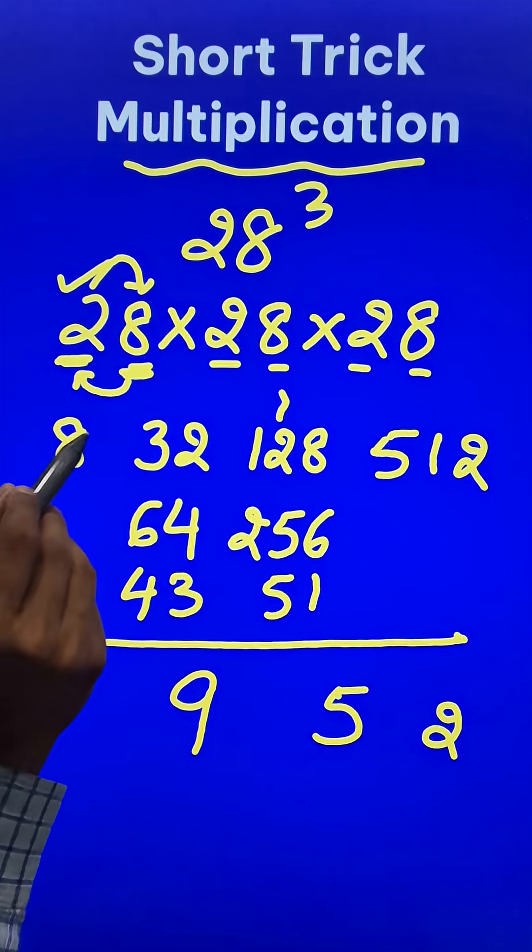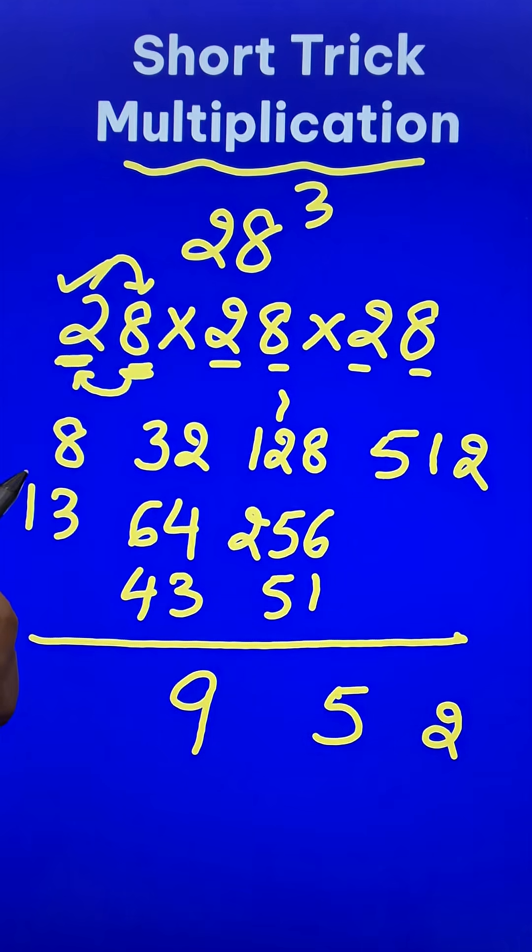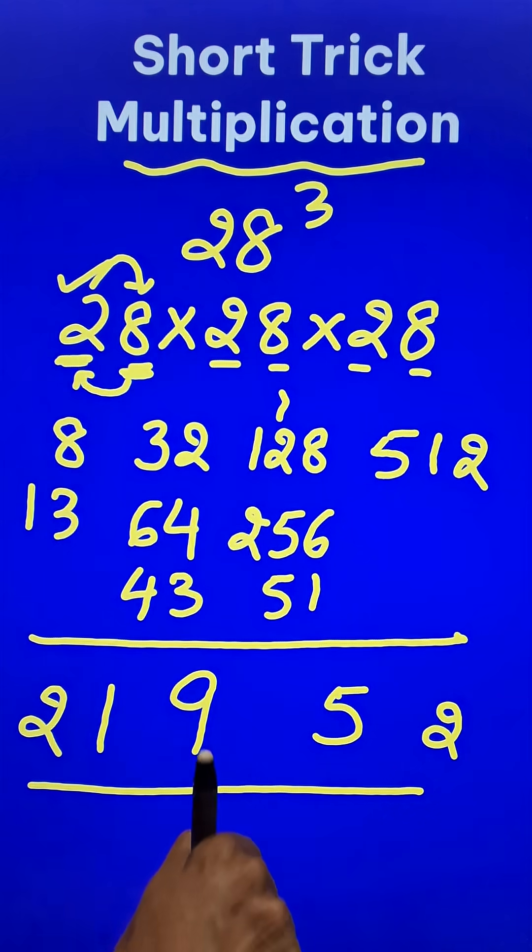And 6 plus 4 is 10, plus 3 is 13, gets carried forward here. And finally, 13 plus 8 is 21. And that gives me 21,952 as the cube of 28.